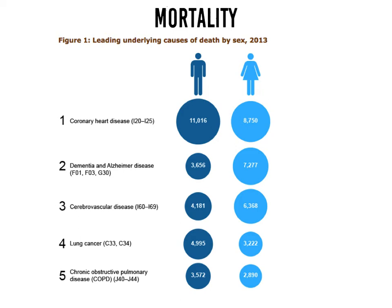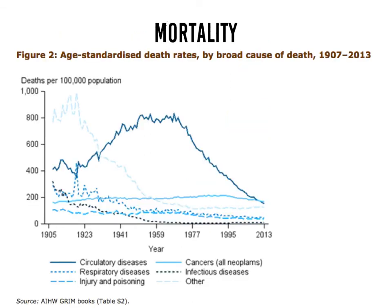This graph shows trends in death for major causes. Circulatory or cardiovascular disease was the major cause of death from 1941, peaking leading up to the 1970s, but there has been a dramatic fall from 1977 down to 2013 with far fewer people dying of circulatory disease. Cancer is the line that intersects with circulatory disease, remaining fairly constant, though with some fall between 1995 and 2013.